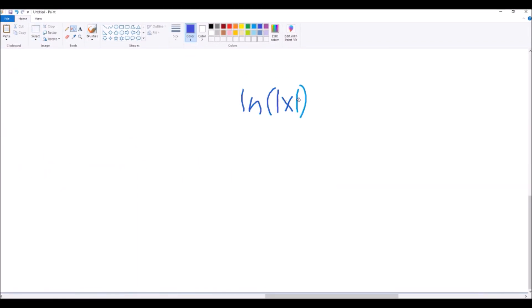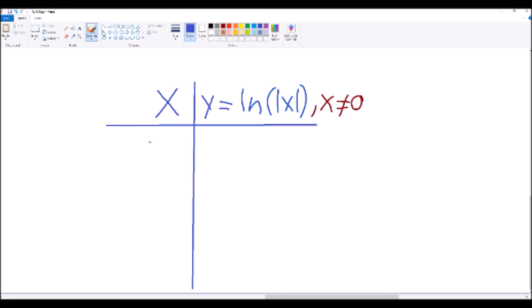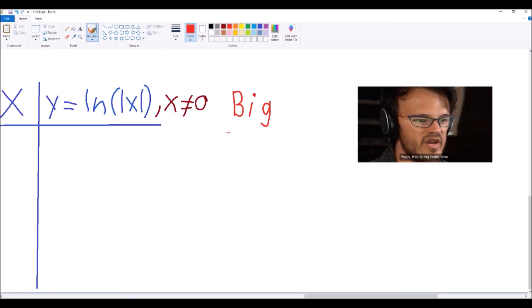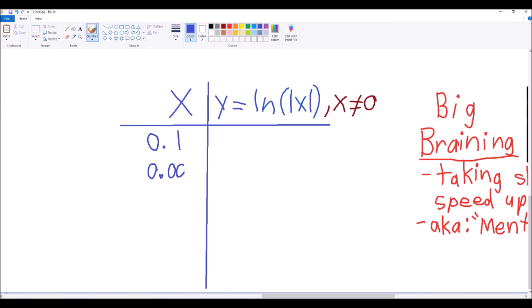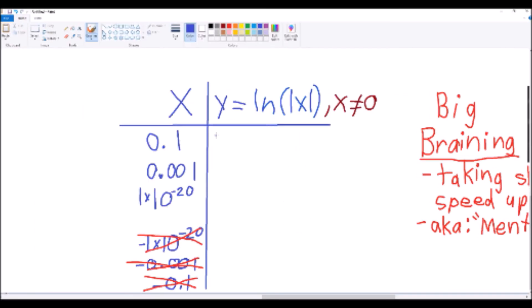For the natural log of absolute value of x case, you can probably see why it needs the absolute values. The forbidden value is less obvious, but it's 0. And because of these absolute values, we can take our first steps into what I call big-braining the answer. That is, and these first steps are ignoring the approach from below because it is the same as approaching from above, because of those absolute values.